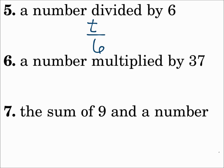Number six: a number multiplied by 37. That would be 37 times a, or any other letter — it's being multiplied. Number seven: the sum of nine and a number. Nine is nine, the sum is plus, and a number could be m — giving 9 plus m.